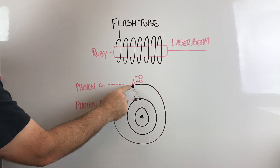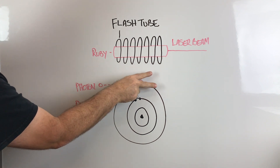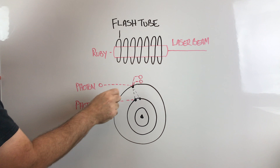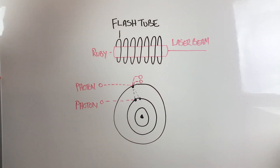This brings the electron to a higher energy state. In this state the electron can be hit again with another photon, causing it to spontaneously emit a photon of energy in the same frequency, phase, and polarization of the incoming photon, which also still exists.